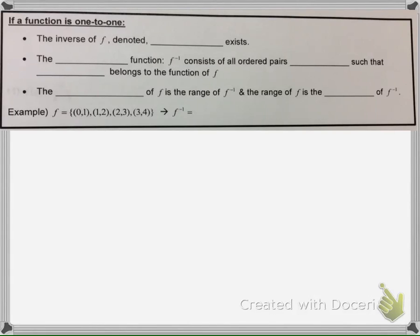Now that we understand what a one-to-one function is — every y can only have one x — if we know that a function is one-to-one, then we know that the function has an inverse. To denote that a function is the inverse of another function, we use a special notation. This does not mean f to the negative first power; we read it as the inverse of f.